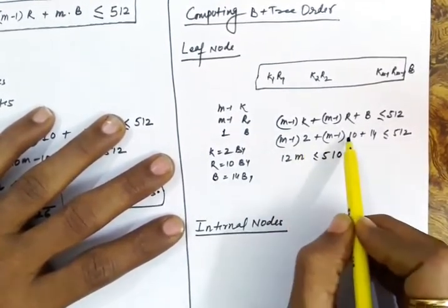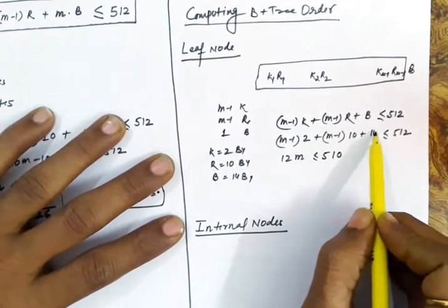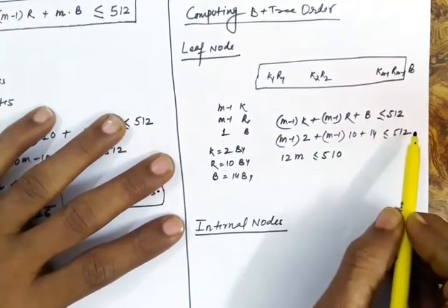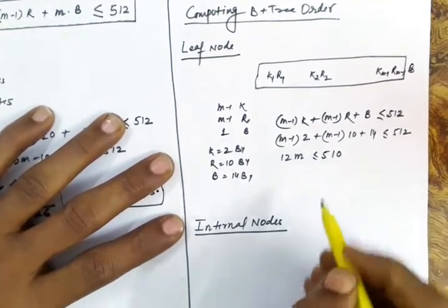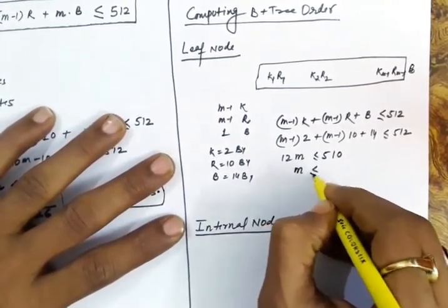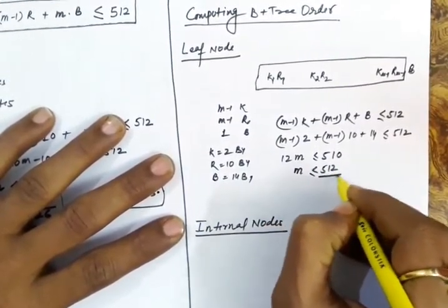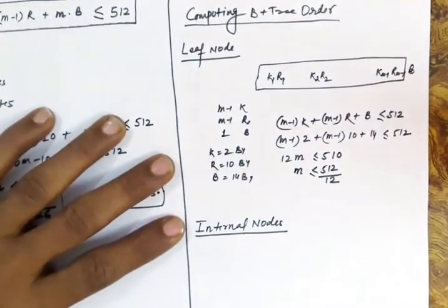Solving: minus 2 minus 10 plus 14 gives plus 2 on the constants side. Moving it to the other side, it becomes minus 2, so 12m ≤ 512. Therefore m is less than or equal to 512 divided by 12.